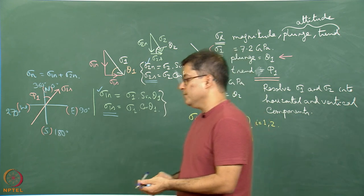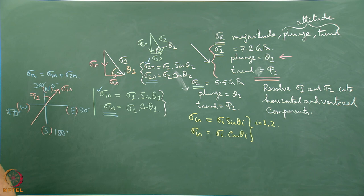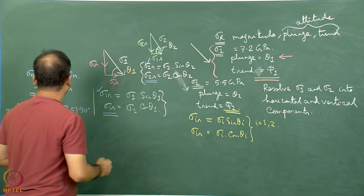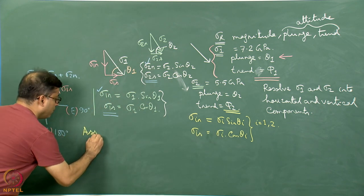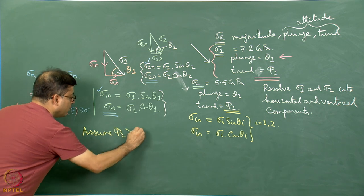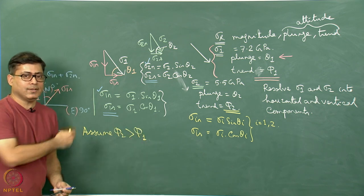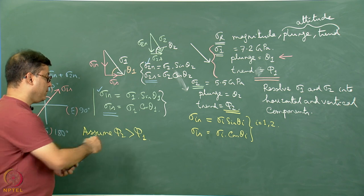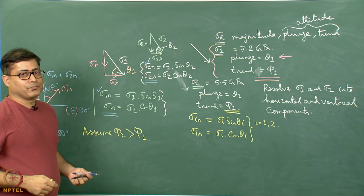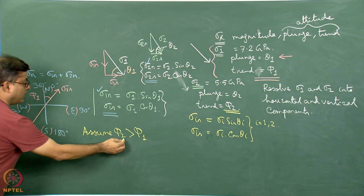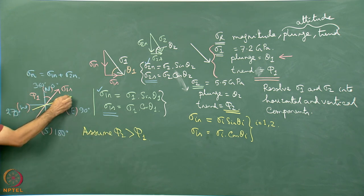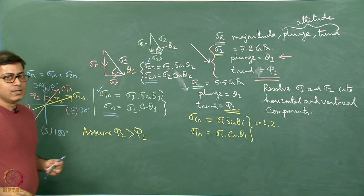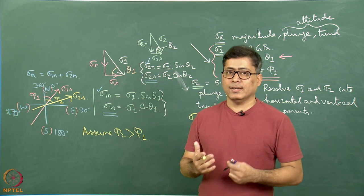Similarly, I draw the sigma 2s component. In the case of sigma 2, the trend is phi 2. Assume phi 2 is more than phi 1 as an example — you can also work with phi 2 less than phi 1 or equal to phi 1. So drawing the angle phi 2 gives us the sigma 2s component. With sigma 1s and sigma 2s drawn on the horizontal plane, we can find their resultant.